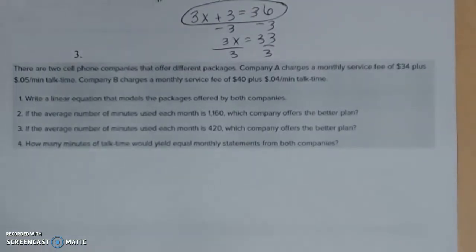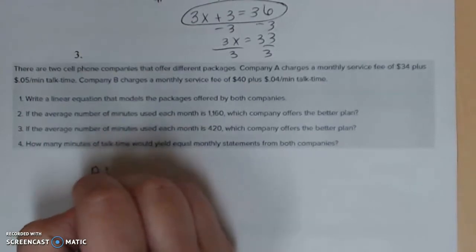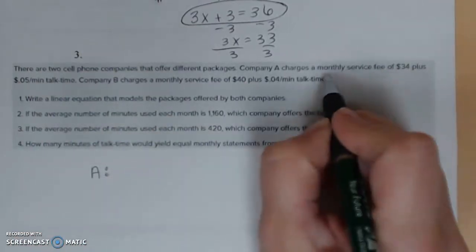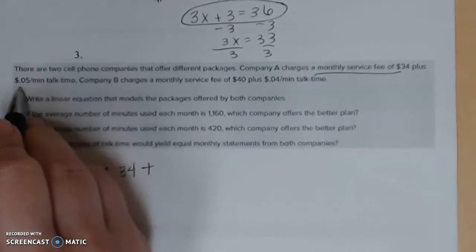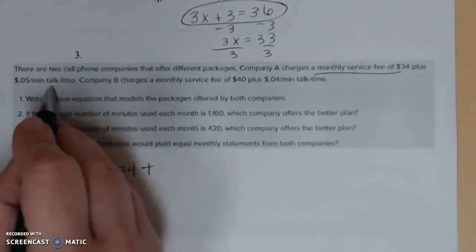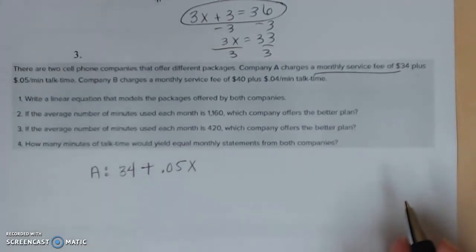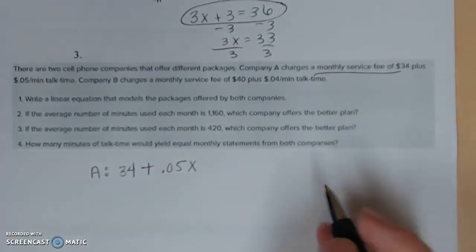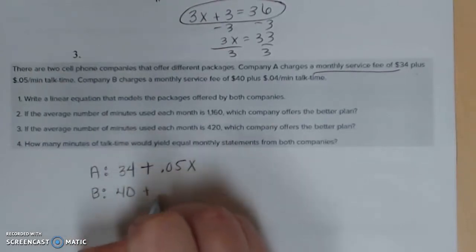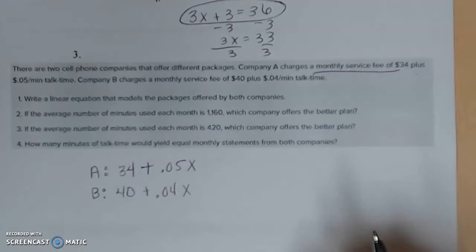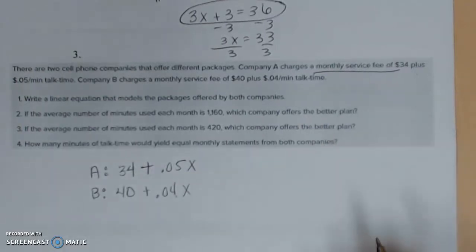Okay this one is more steps but still the same process. There are two cell phone companies that offer different packages. Company A, so look I'm going to say A, charges a monthly service fee of $34, so they're only going to charge that once a month, plus $0.05 per minute talk time. So for however many minutes you talk they're going to multiply that by a nickel and add it on to your monthly bill. Company B charges a monthly service fee of $40, so one time fee once a month, and $0.04 per minute of talk time. So although we have a larger monthly fee we have a lower per minute fee. So it just depends on how much we're going to talk.